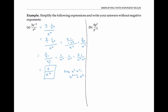An alternate way of solving this problem is to start by using the quotient rule. I can rewrite this as 3 times x to the minus 2 over x to the fourth, and by the quotient rule, that's 3 times x to the minus 2 minus 4, or 3 times x to the minus 6. Now using the negative exponent rule, x to the minus 6 is 1 over x to the sixth, and this product of fractions simplifies to 3 over x to the sixth — the same answer as before.